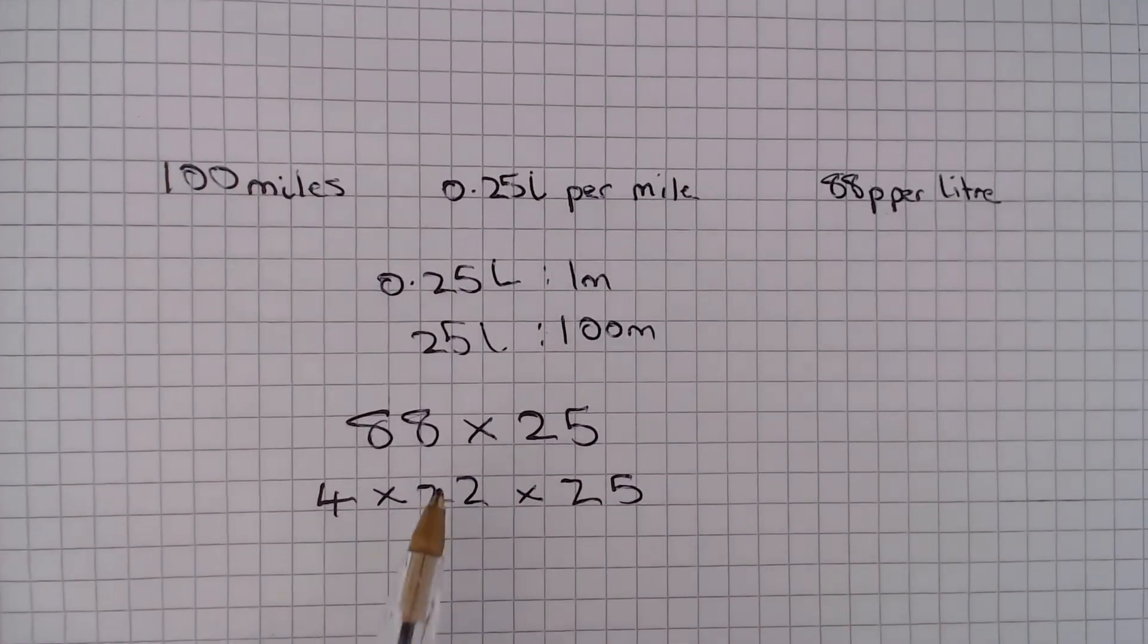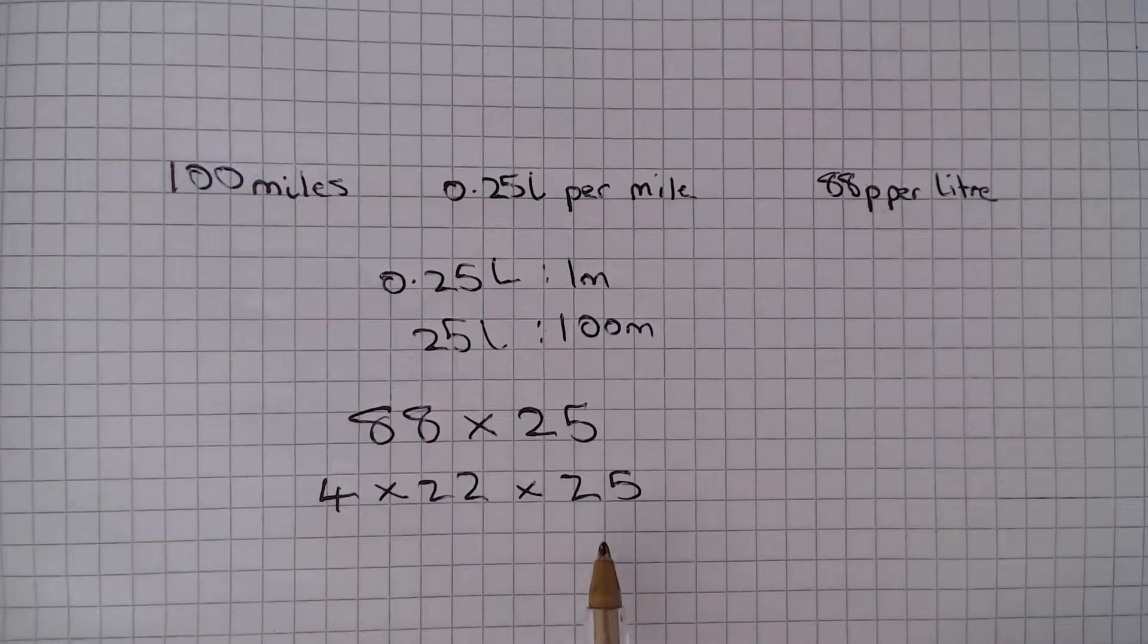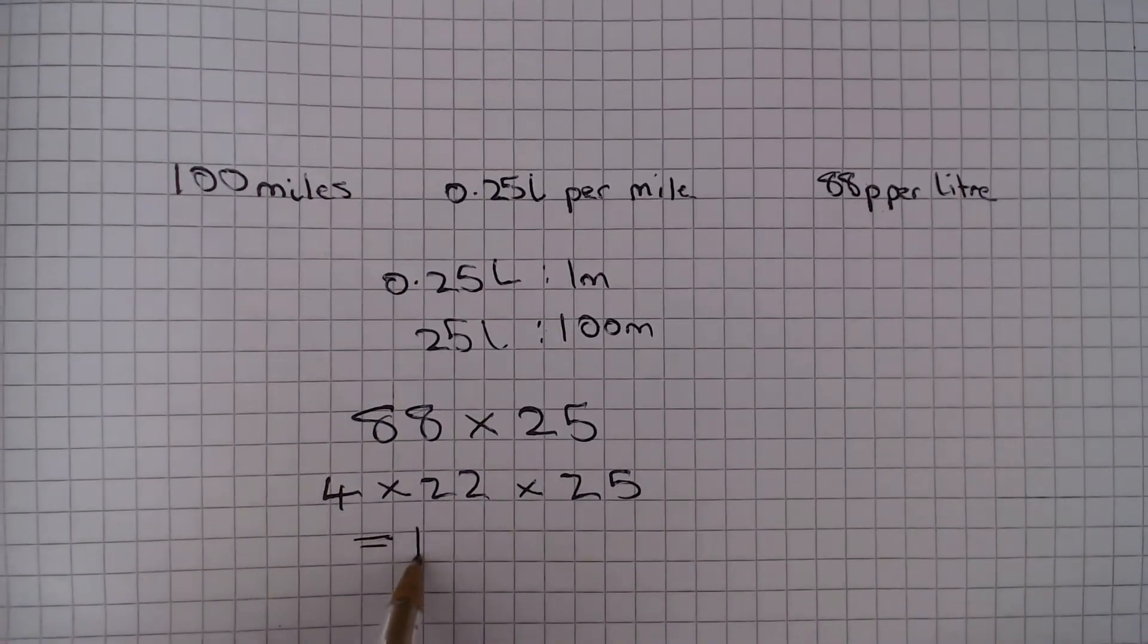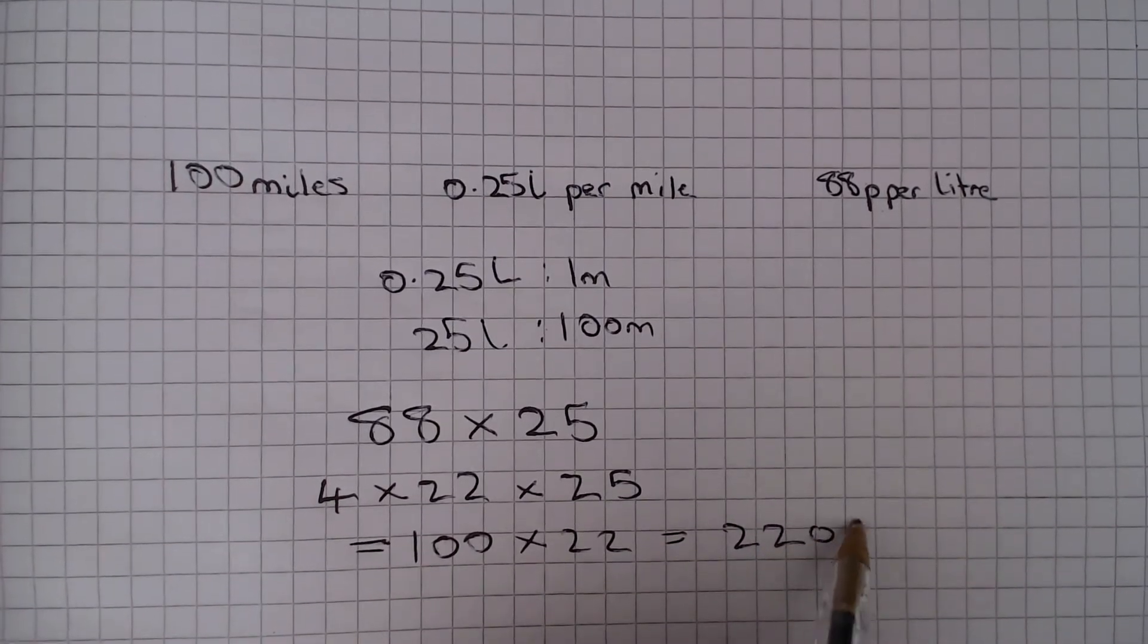It seems a little bit strange that I've done this, but there's good reason for it. Because we know that 4 multiplied by 25 is 100. So this is the same as 100 multiplied by 22, which is 2200.